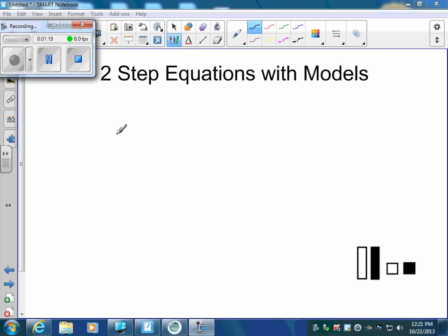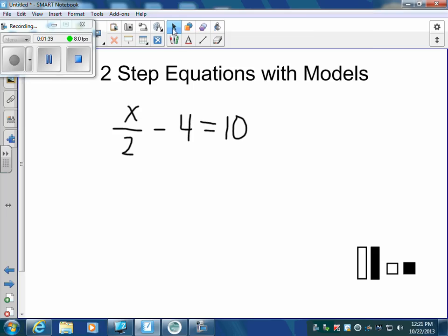Our next equation, we could have x divided by 2 minus 4 equals 10. To model this, I'd take an x, but I don't have that whole x. I only have half of it. So I have to show that I only have half. So half of that x...